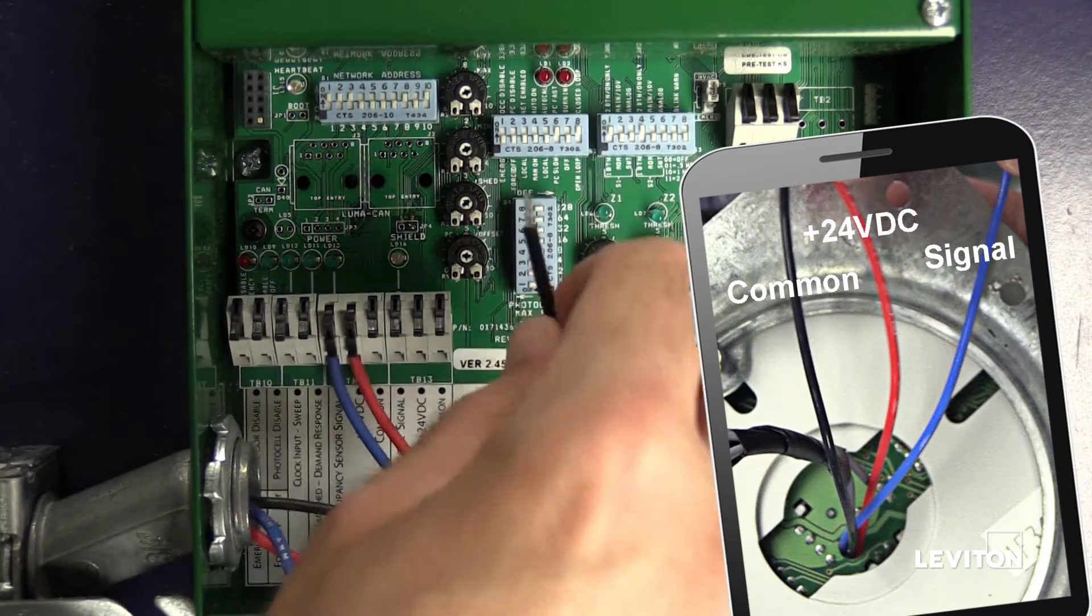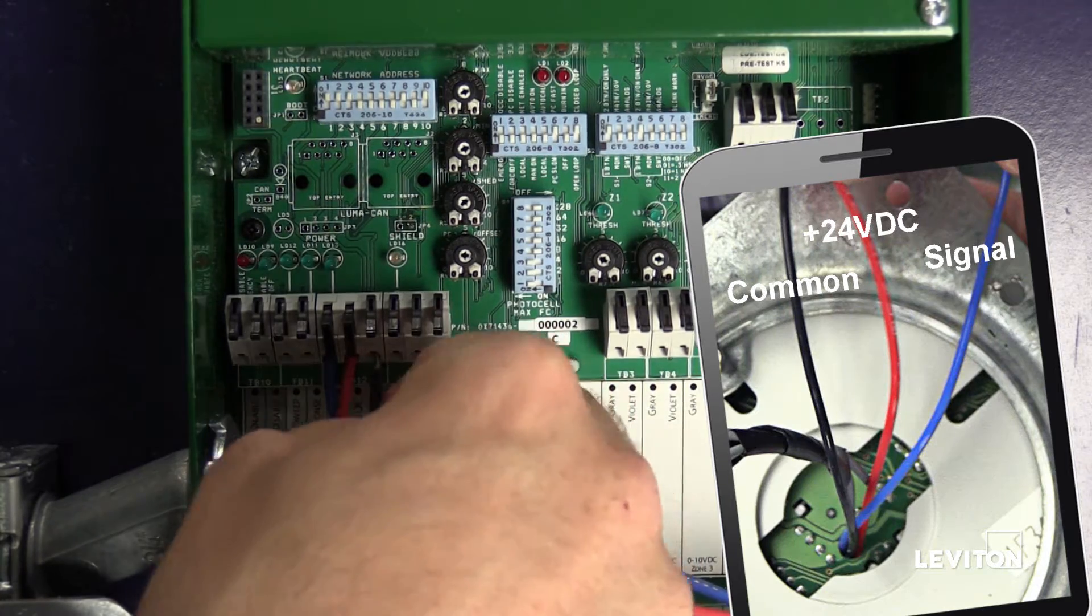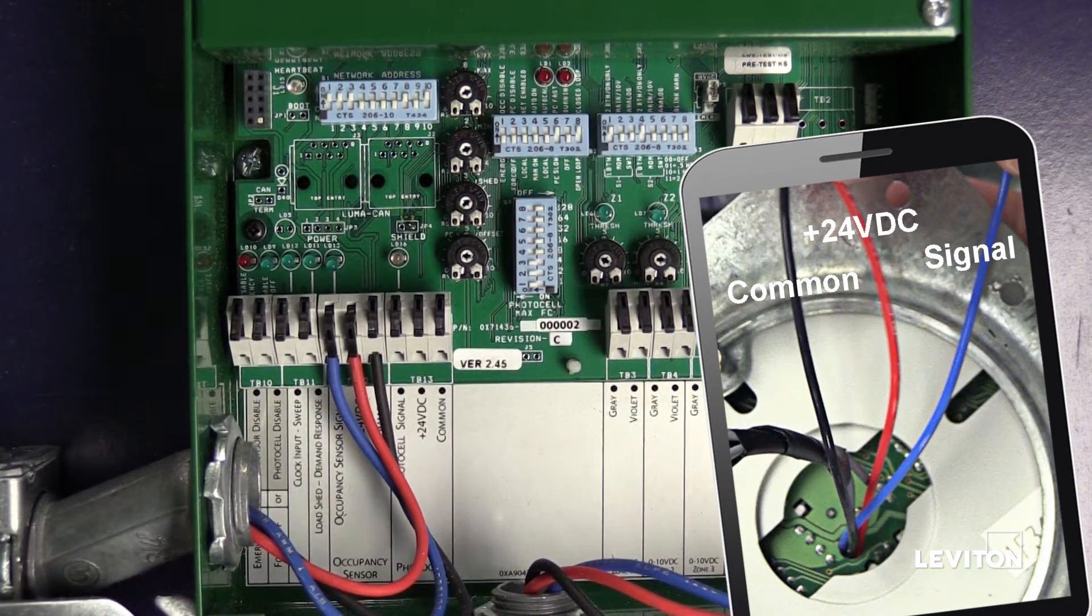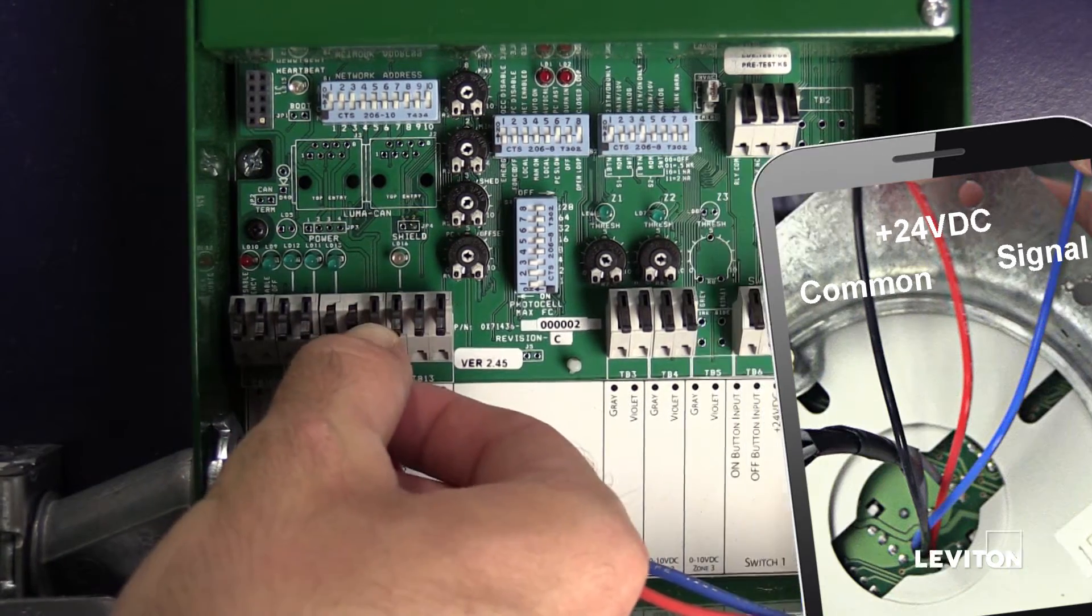Land your common wire onto the connector labeled Common. Press the locking mechanism to secure the connection.